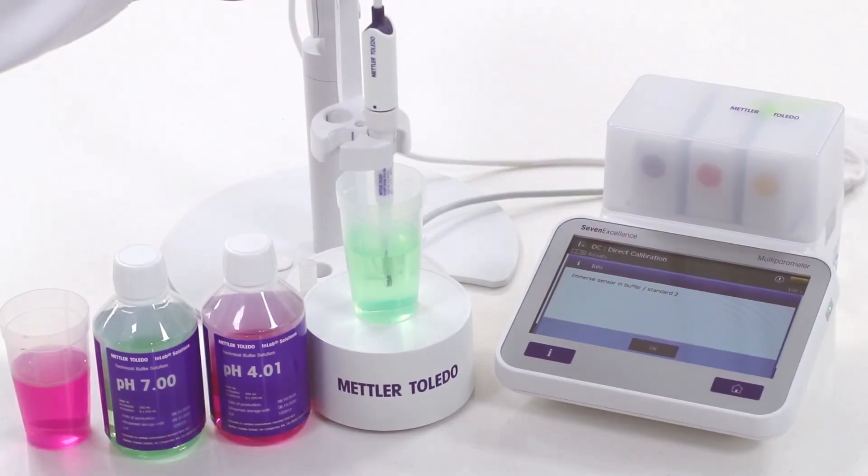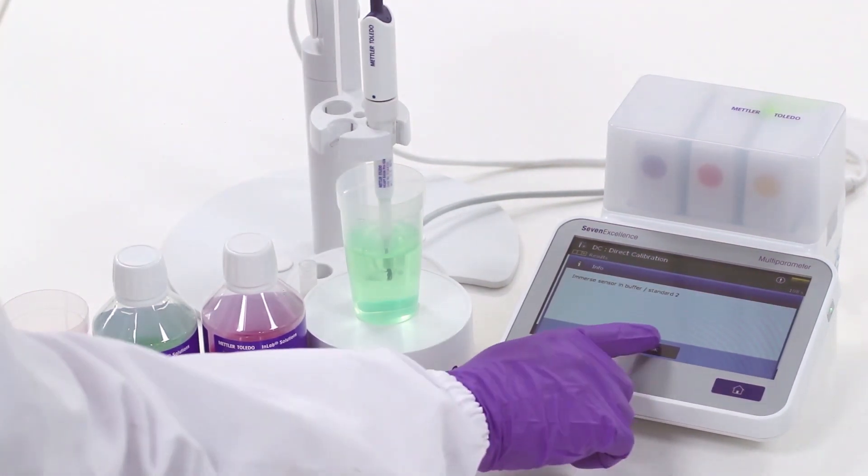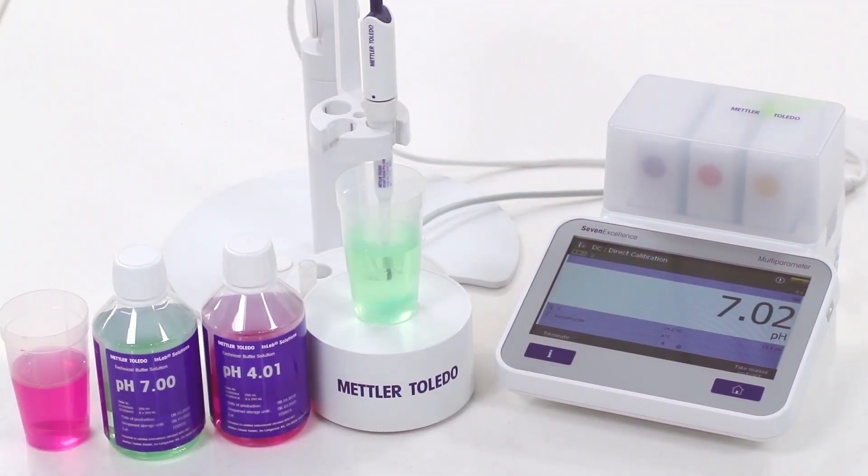Calibrate the electrode with pH buffer solutions from Mettler Toledo. Use the buffers to bracket the sample pH range.